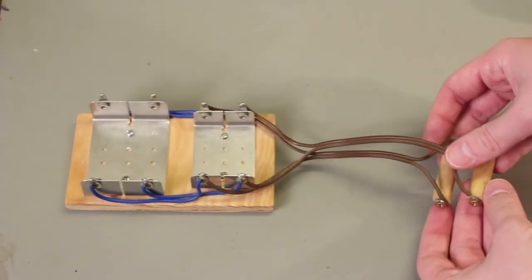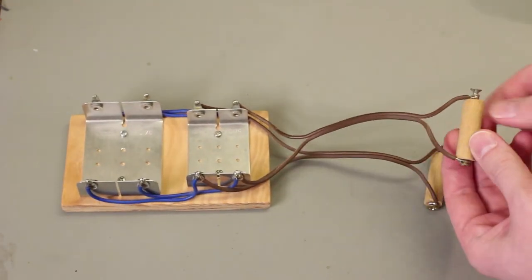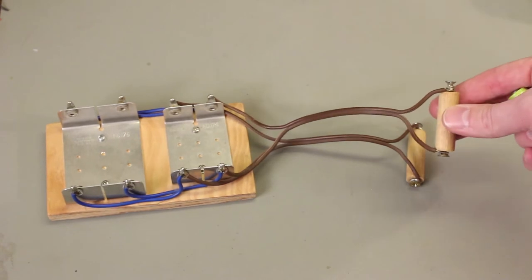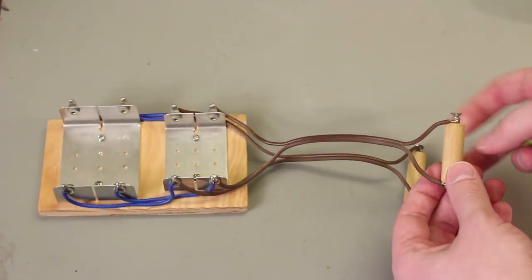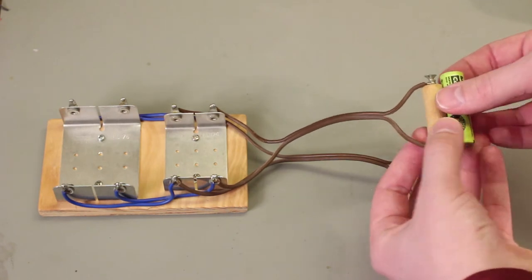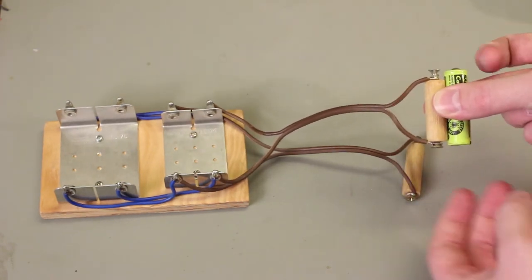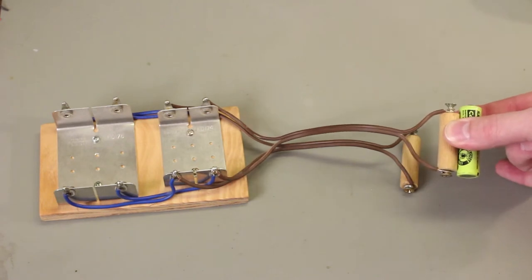So what this does, these devices here, this is just a simple hardware store dowel with a couple of junk box screws in it that is designed to be roughly the same diameter and same height as a AA cell.